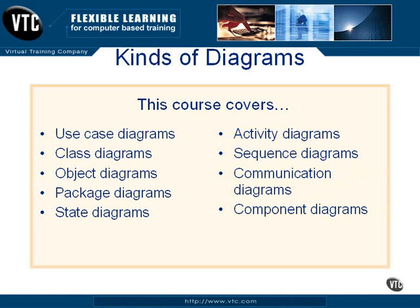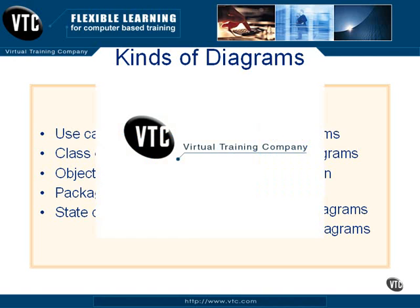We'll cover component diagrams, which give a view of the system in terms of its components — the modules that represent a system's building blocks. And finally, we'll look at deployment diagrams, which map software artifacts to hardware to show the system's physical layout. There are other kinds of UML diagrams, but due to time constraints, these ten common diagrams are the ones we'll be covering in this course. So let's get started. Because the UML evolved from object-oriented system design, we'll begin with a quick review of object orientation concepts.